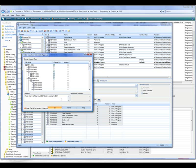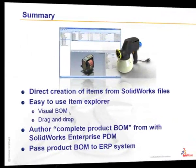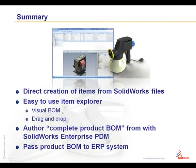With our item-centric bill of materials for the Power Painter ready to be approved, we can summarise the steps we have taken and the benefits of working in this item-centric method. A great benefit of Enterprise is the direct creation of items from SOLIDWORKS files and other CAD geometry. It has an easy-to-use item explorer with a visual BOM and drag-and-drop interface, allowing us to very easily create our complete product bill of materials and then pass this to our ERP system.